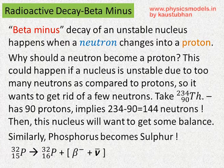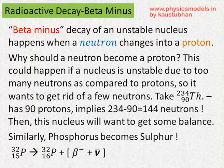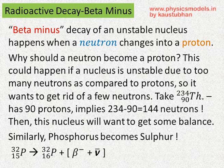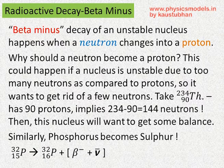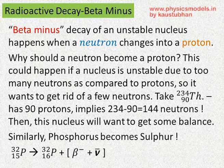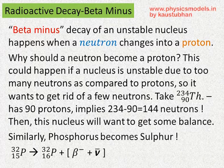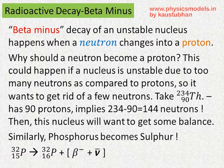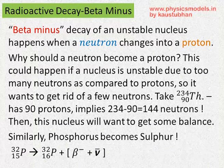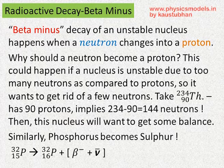Now the question is, why should a neutron become a proton? This happens in a nucleus which will be unstable if there are too many neutrons as compared to protons. Suppose we take thorium-234-90: there are 90 protons, so that means there are 234 minus 90, that's 144 neutrons. There is a heavy imbalance, and this nucleus will want to get some balance. Therefore, the neutrons will want to become protons to try to balance out the two.